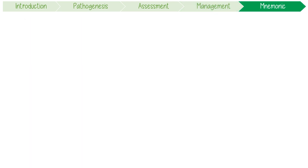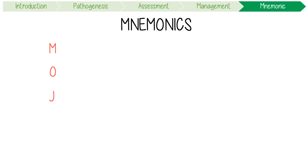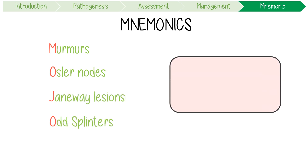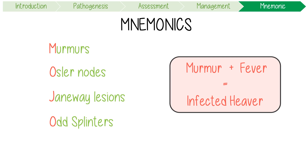To summarize with our mnemonics: on exam, look for a patient's MOJO — murmurs, Osler nodes, Janeway lesions, and odd splinter hemorrhages. And never forget: a new murmur plus fever is an infected heaver until proven otherwise.